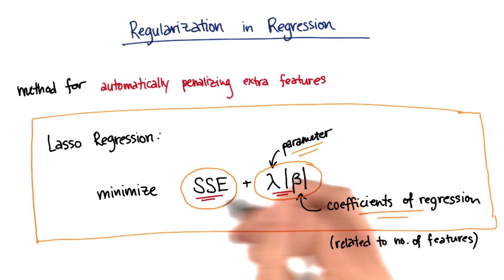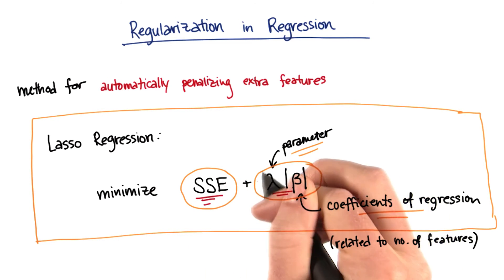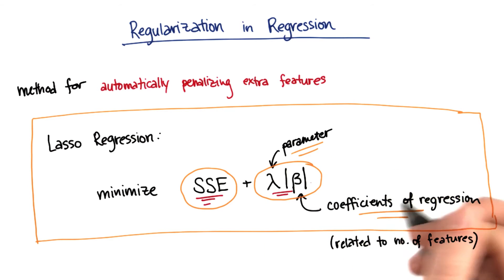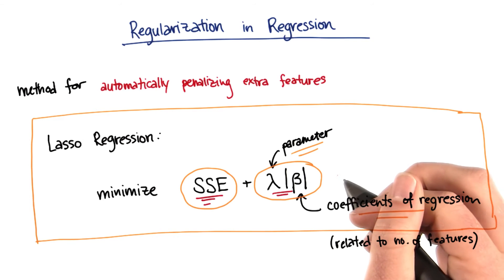So what this is saying is that the gain that I get in terms of the precision, the goodness of fit of my regression, has to be bigger than the loss that I take as a result of having that additional feature in my regression.